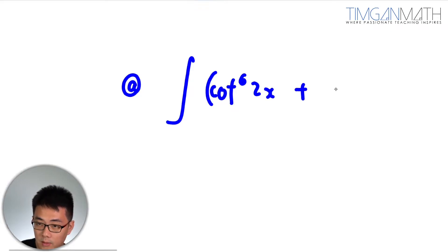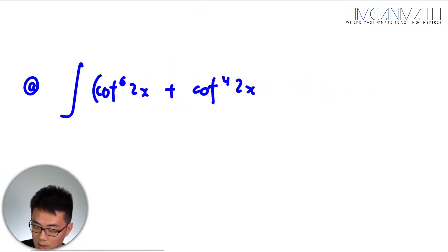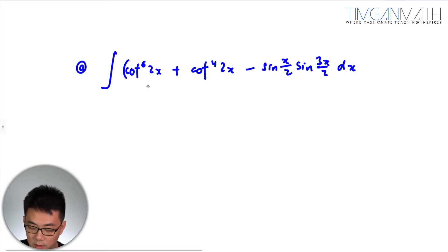Minus sine x over 2 sine 3x over 2 dx. So this case here what I would suggest is essentially you see that these are cot 4 and cot 6, what we could do is just factorize the cot power 4 out.